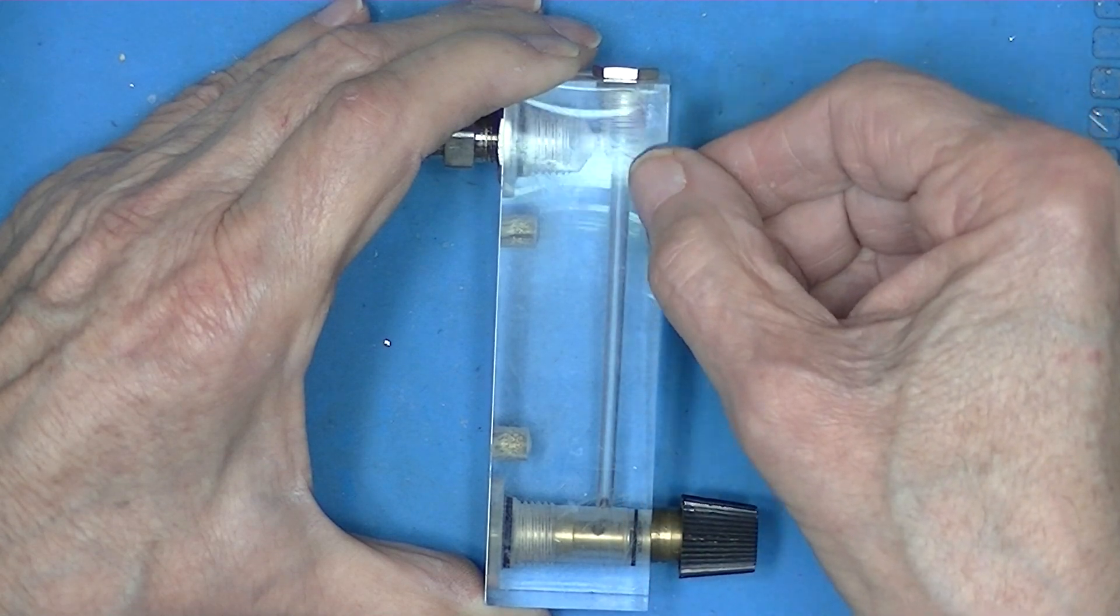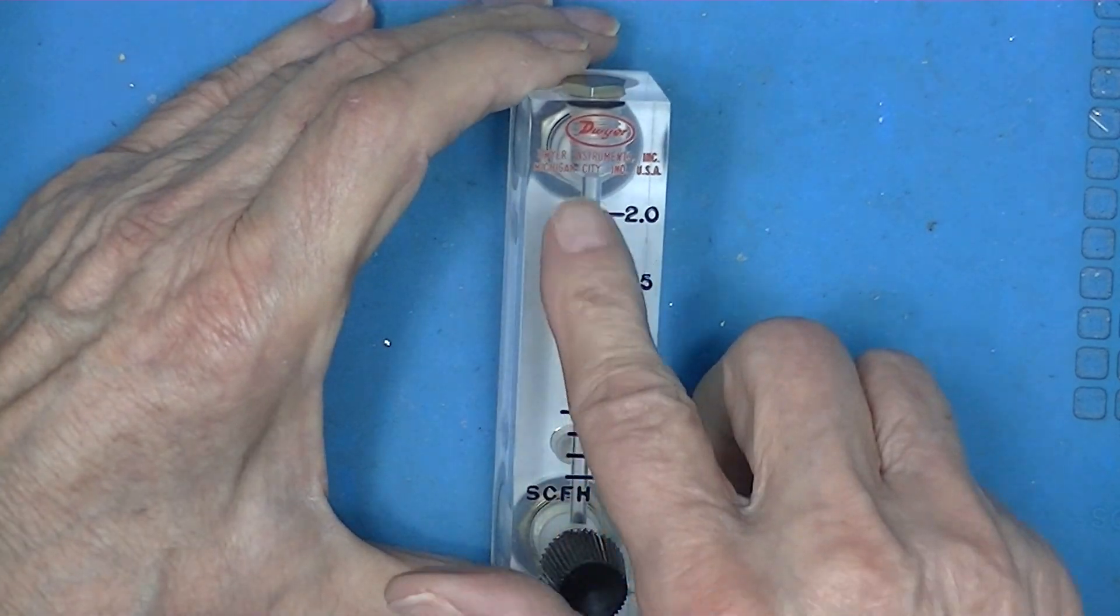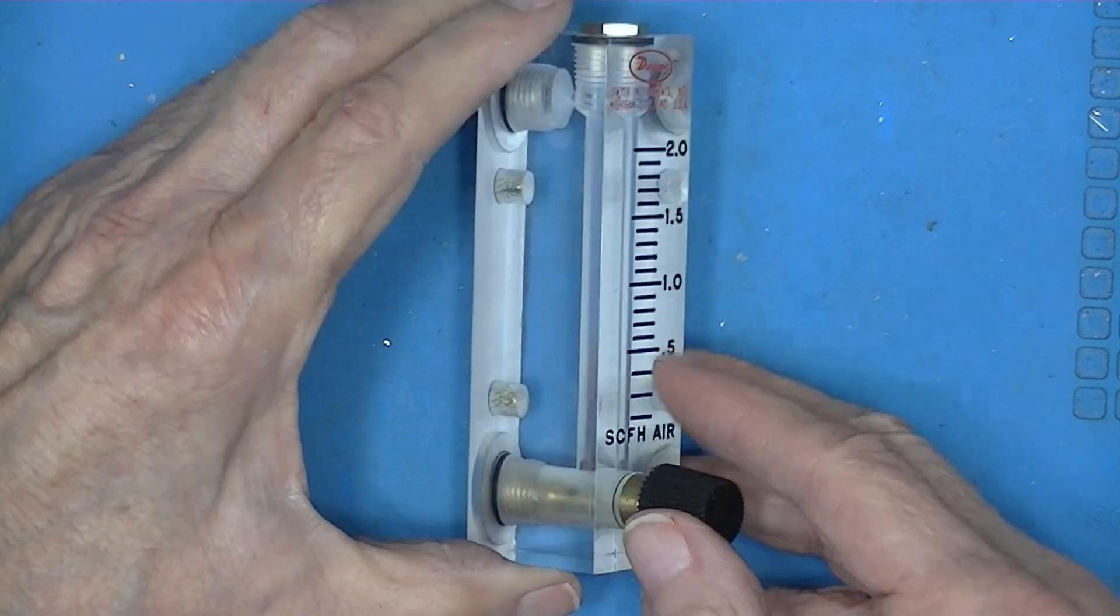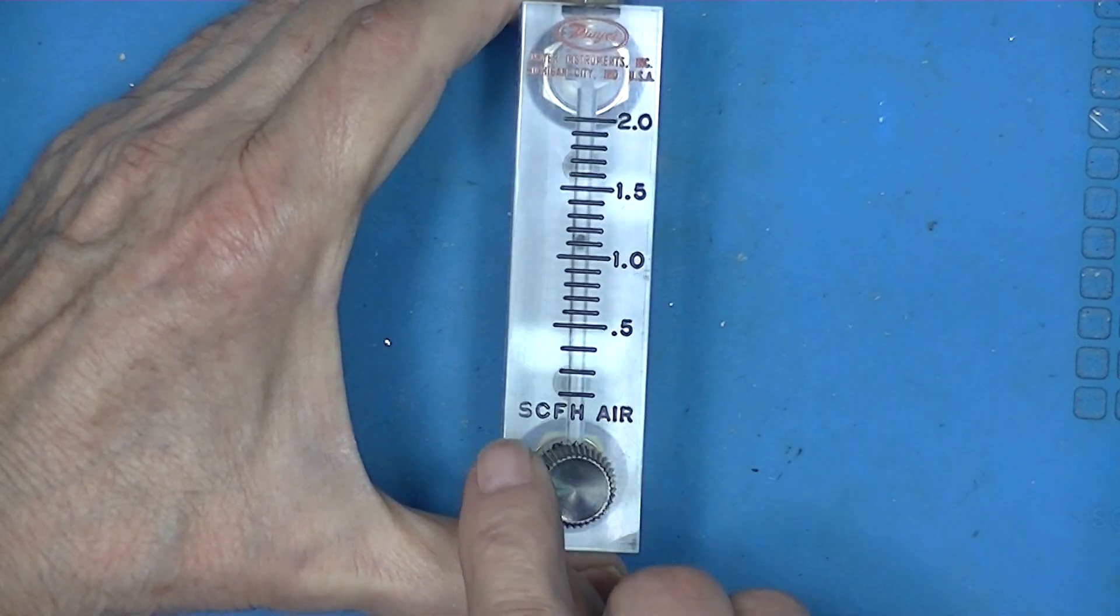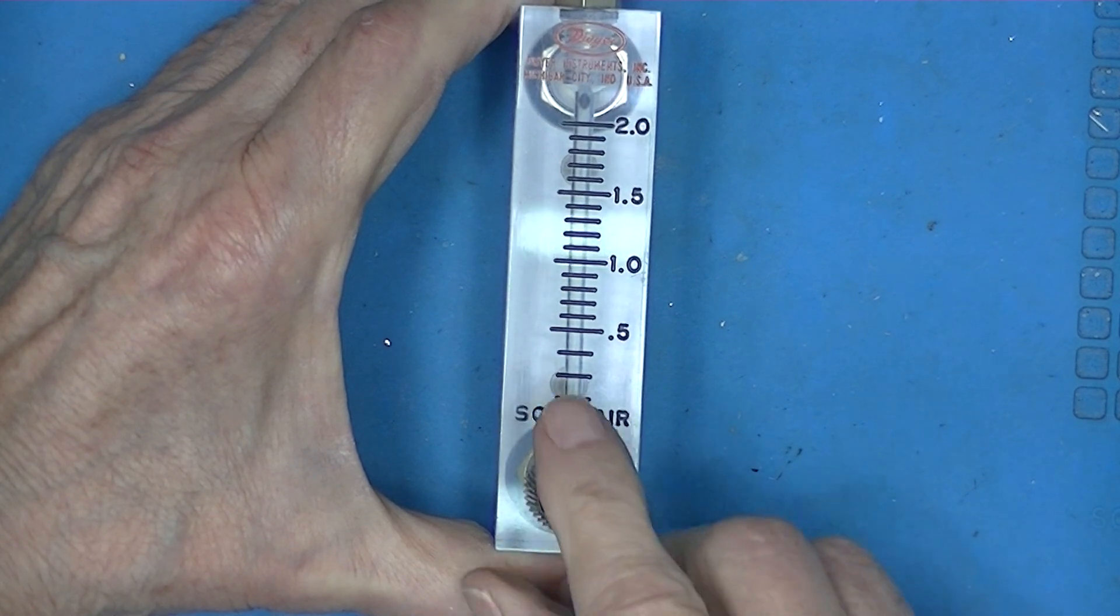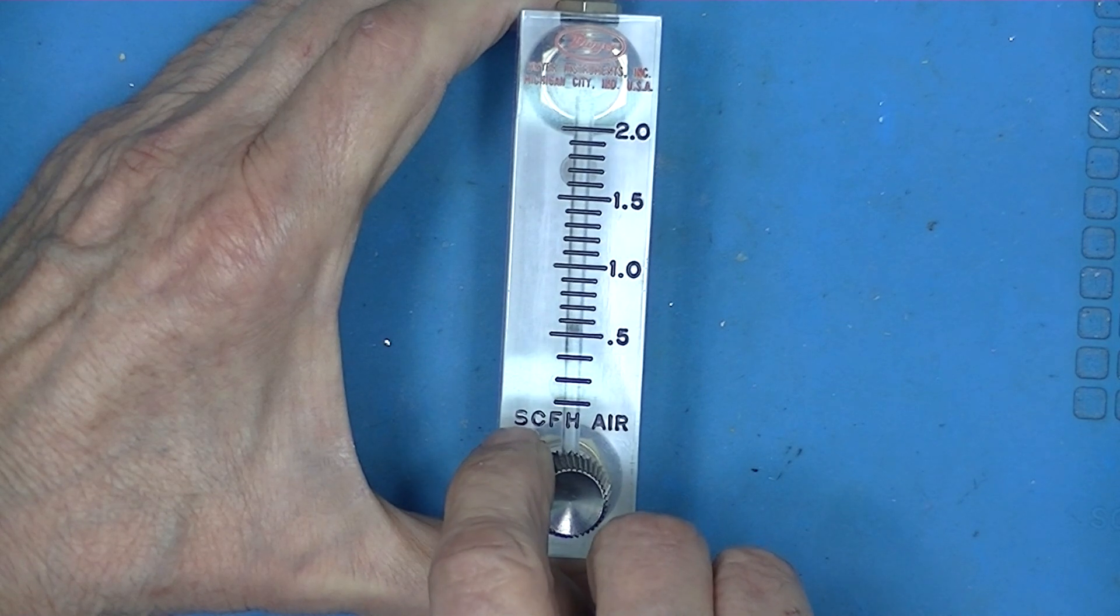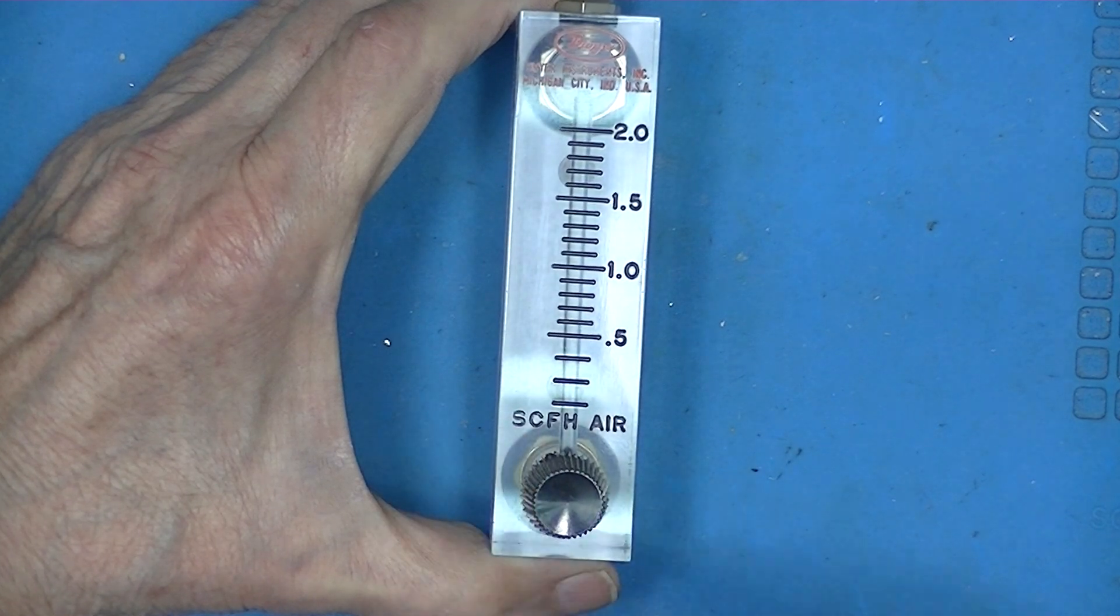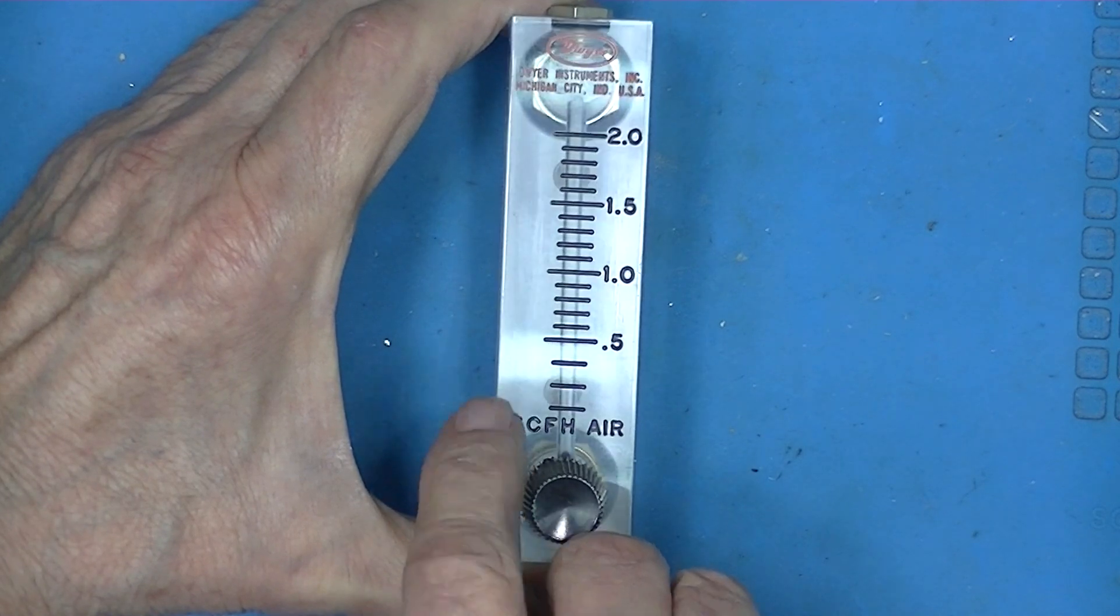This particular flow meter is made by Dwyer, it's one of the less costly ones, and it measures air. It's marked clearly standard cubic feet of air, so we know what a cubic foot is. We breathe air. Standard sets the temperature and pressure, which in English terms is seventy degrees Fahrenheit.